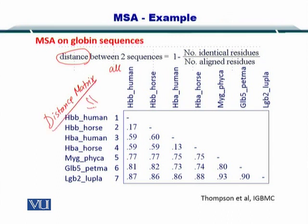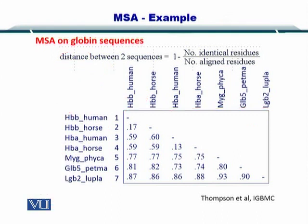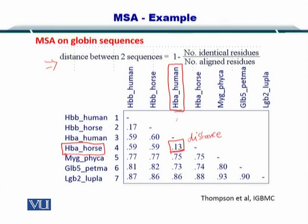The distance matrix is provided here, and multiple types of globins are listed. Once you compute the distance between each one of these proteins, you can fill up this matrix. This matrix is already filled up using this formula after doing pairwise sequence alignment. You will notice that HBA horse — that is, globin from the horse — is very similar to globin from humans, or HBA human. HBA horse has a distance of just 0.13 from HBA human, which is very small, meaning these two proteins are very similar.